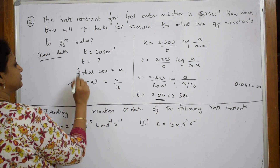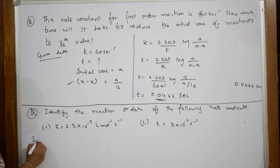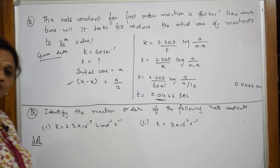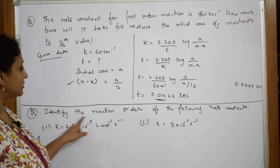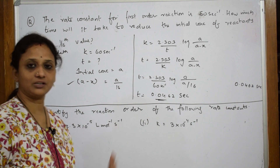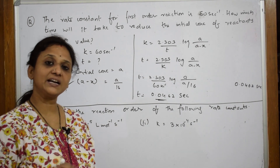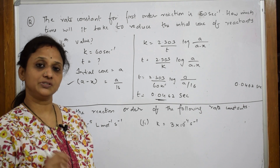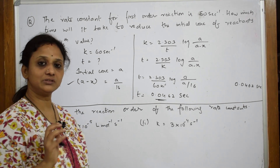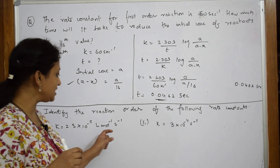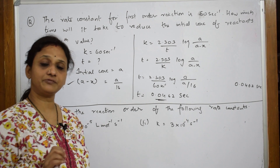If you know this concept, the application is easy. Now let us come back and solve the next problem — another variety of first order kinetics. What is that? Identify the reaction order of the following rate constants. They have given you values and you are supposed to identify whether it is first order, zero order, or second order. It's simple — you can identify by seeing the units.